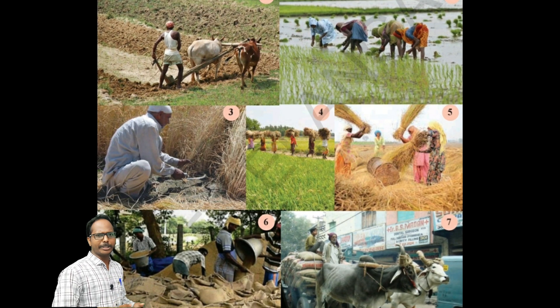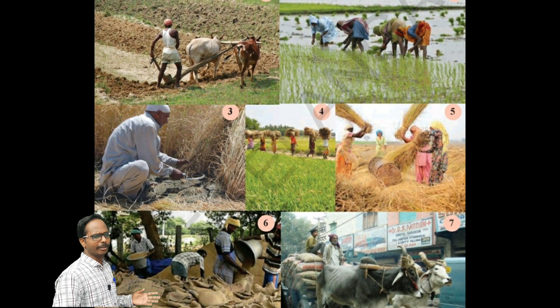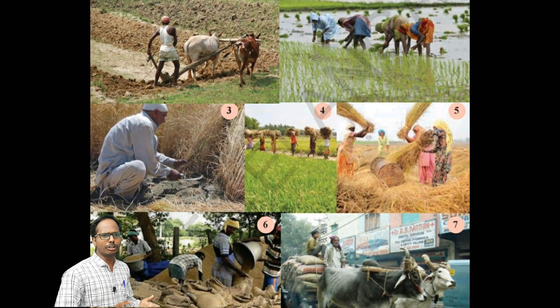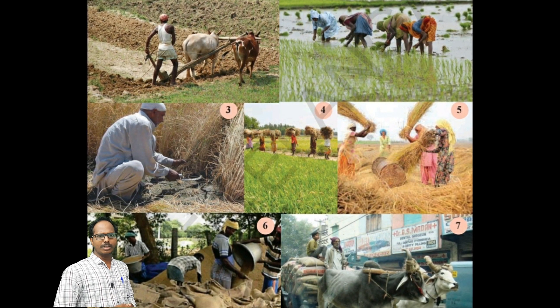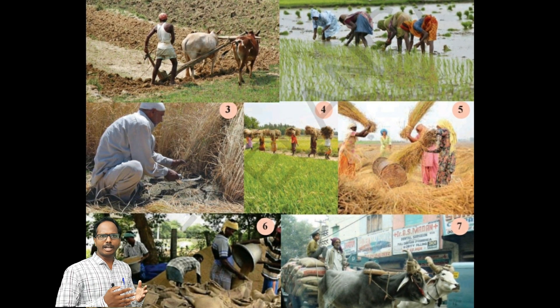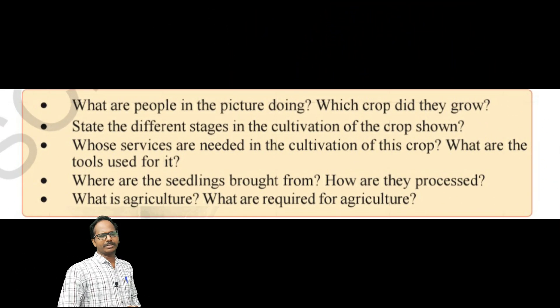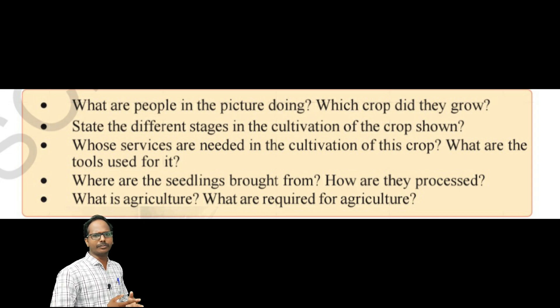What are the people doing in the picture? They are doing agriculture. Which crop did they grow? They are cultivating a rice crop in the picture. State the different stages in cultivation of crops shown.